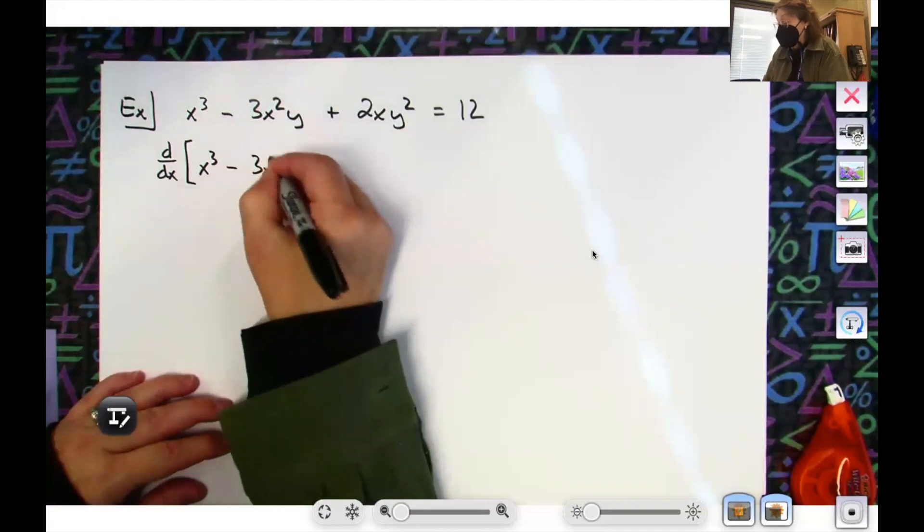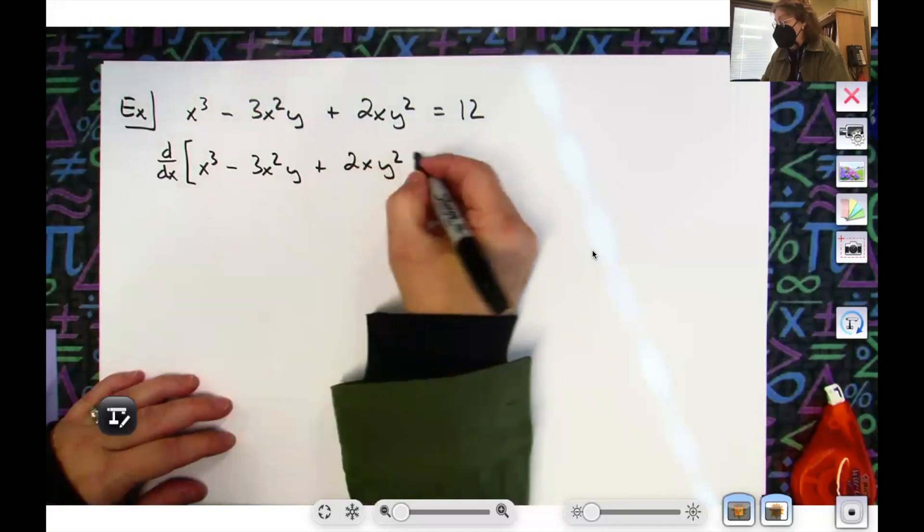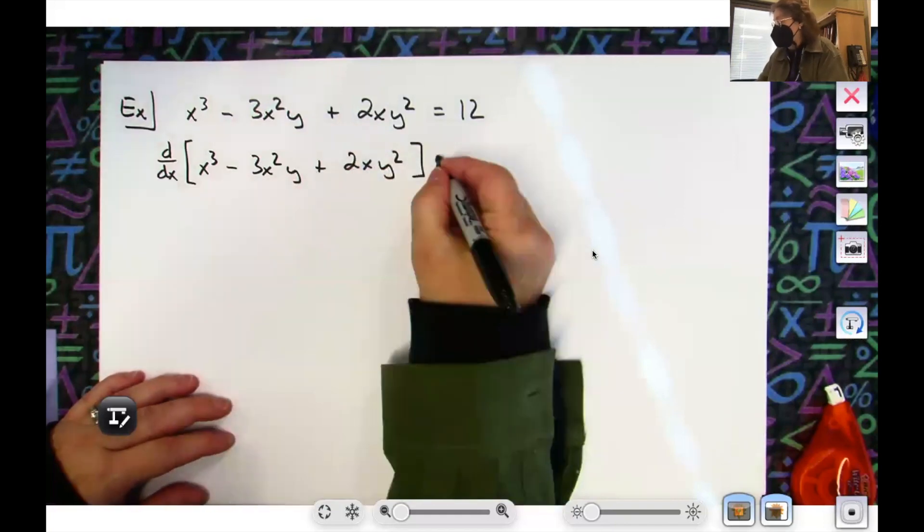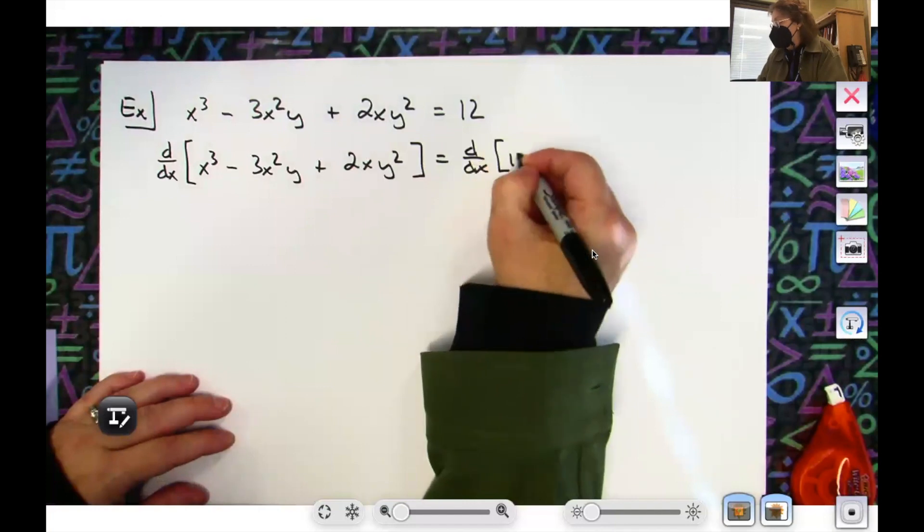I changed that to a cube, I'm so sorry. Okay, so x³ - 3x²y + 2xy², and I left myself some room in there because I'm going to write a little bit more, and then d/dx of 12.